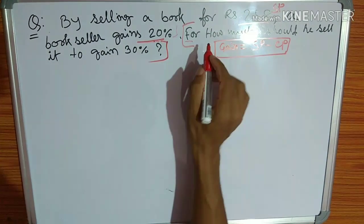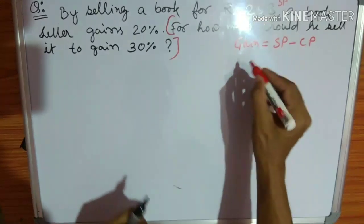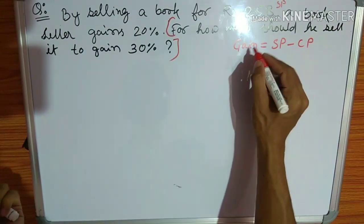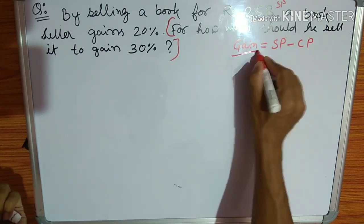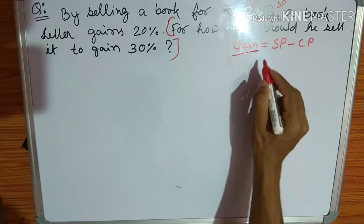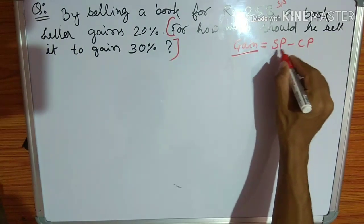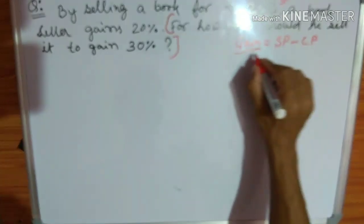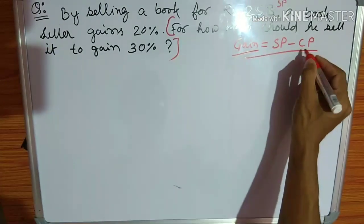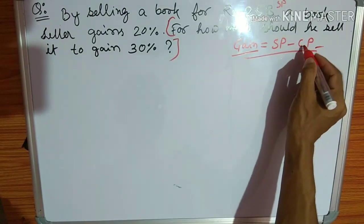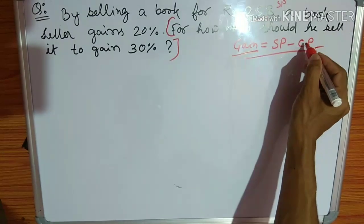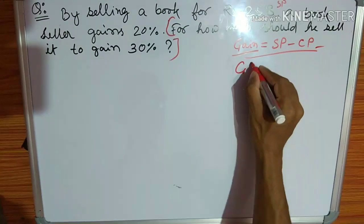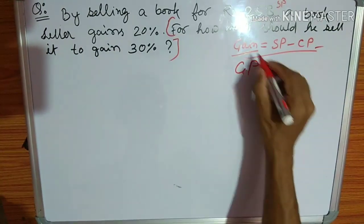The formula is: gain is equal to SP minus CP. Gain is profit. So: profit equals SP minus CP. Using this formula — CP plus gain equals SP. The cost price is what we need.